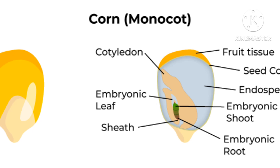The seed coat or testa of a corn seed is bonded to the fruit wall or pericarp. The seed is golden in color and triangular in shape on the outside. A small opaque, oval and whitish region on one side of the seed contains the embryo. The embryo has only one large cotyledon called scutellum, which is located towards the side of the embryo axis.